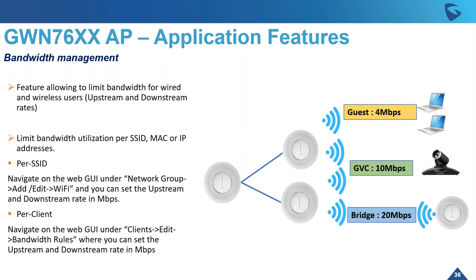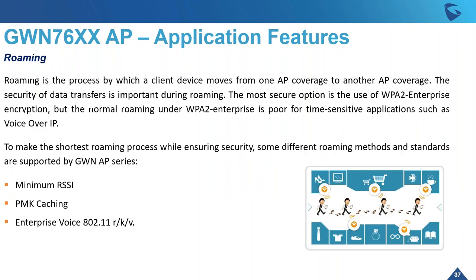The GWN supports bandwidth management, allowing you to limit bandwidth for wired and wireless users upstream and downstream. You can limit bandwidth utilization per SSID: go to Network Groups, click Add/Edit, then Wi-Fi, and select the bandwidth allocation for that SSID. You can also limit per client: navigate to the client section, identify the client, click Edit, and enter upstream and downstream bandwidth limits for that particular client. You can also limit bandwidth per MAC address or IP address.